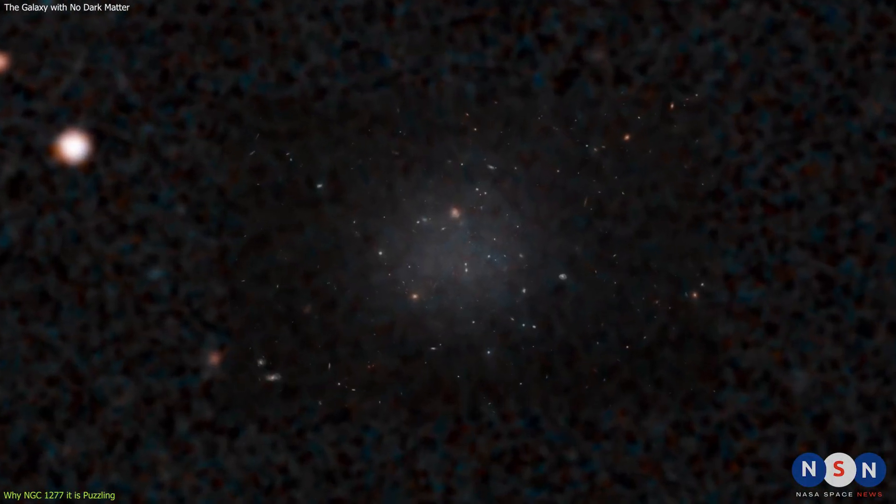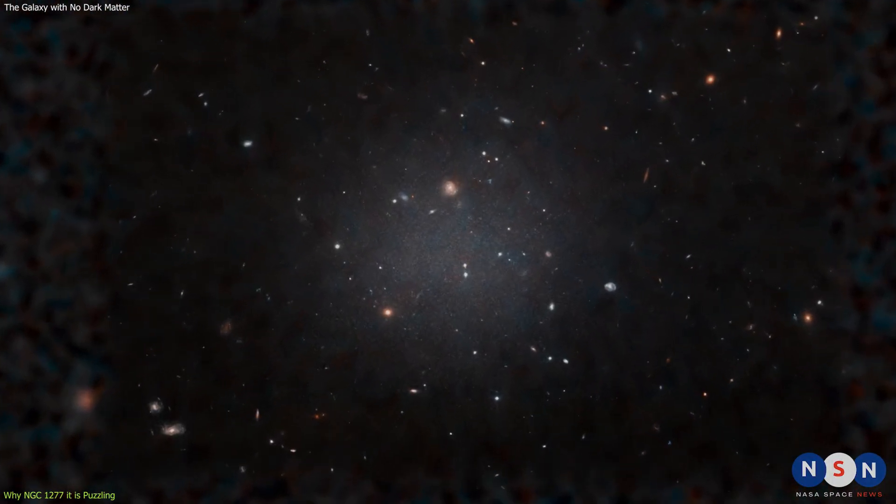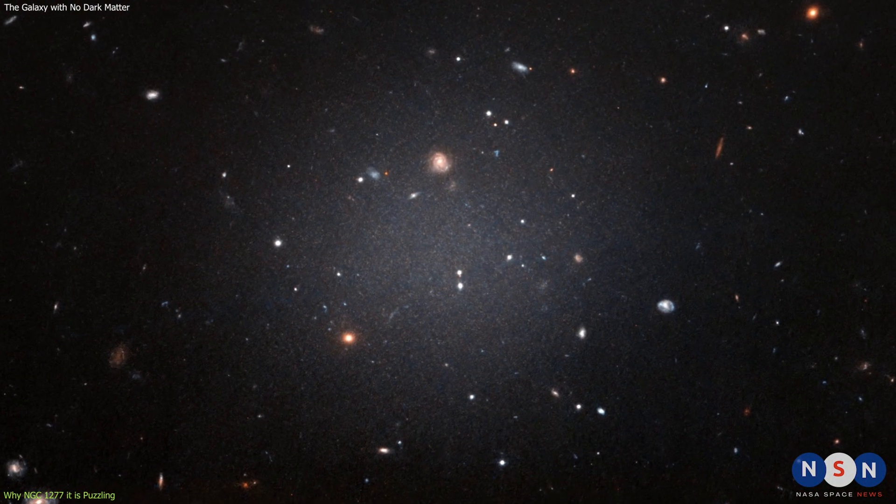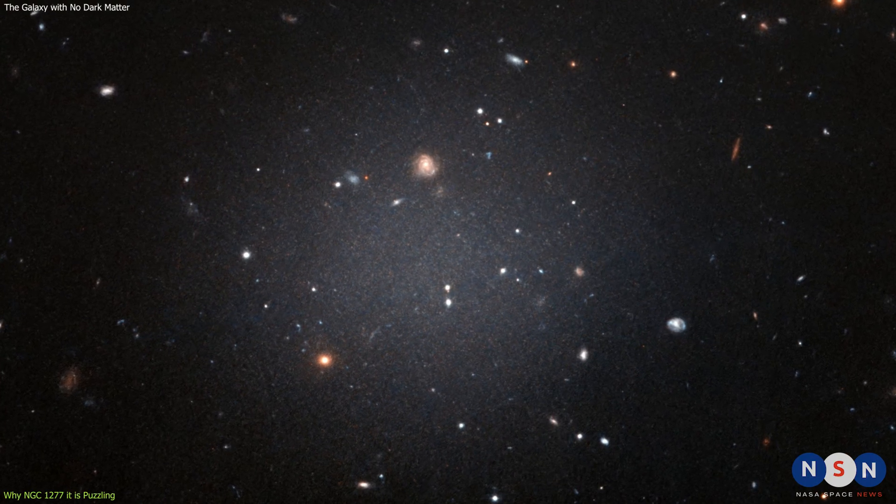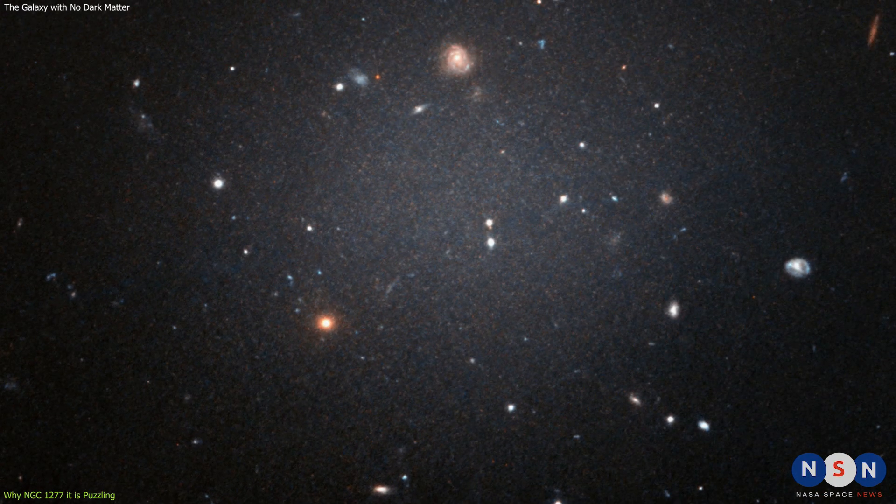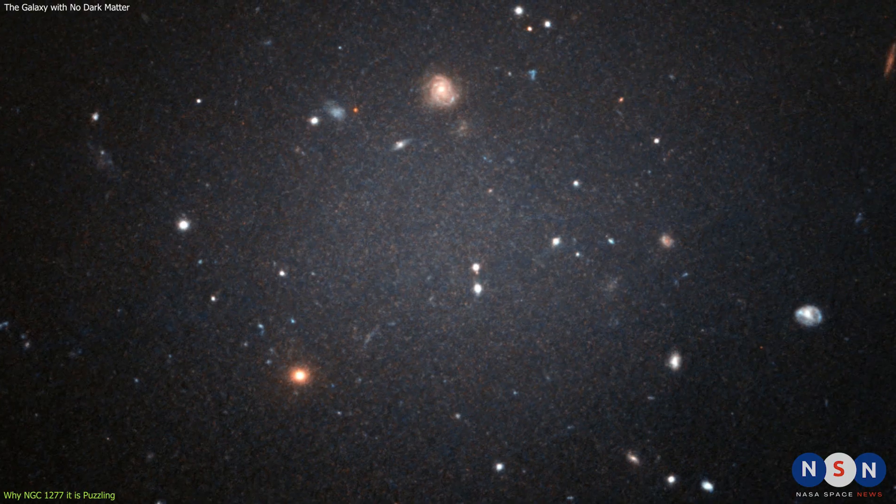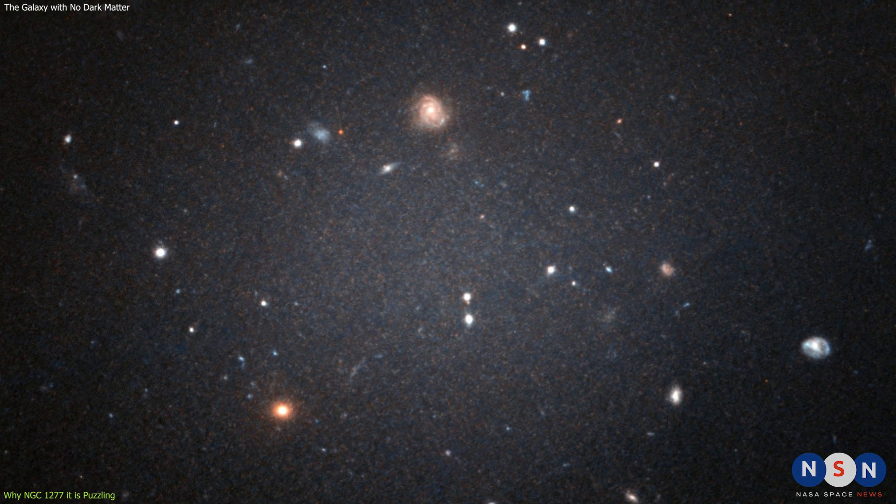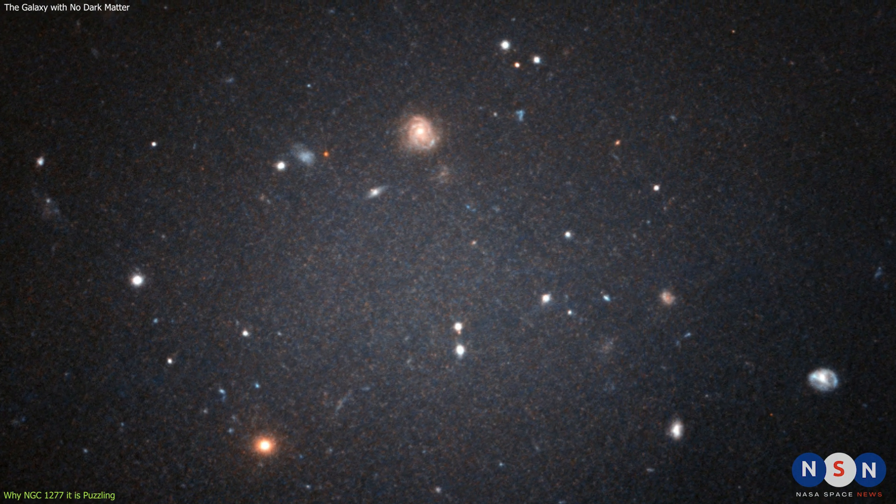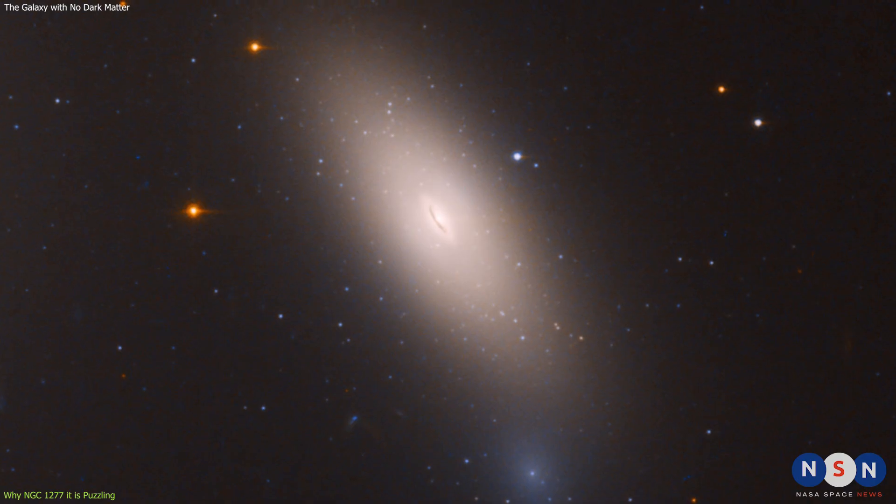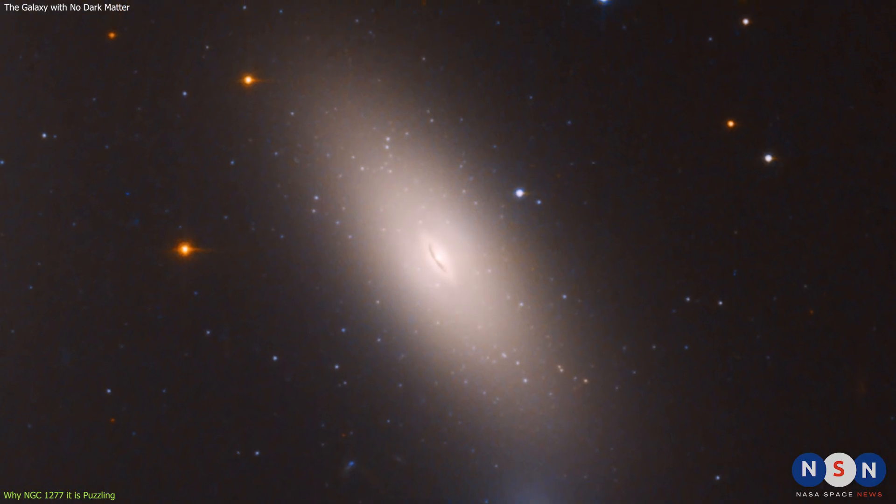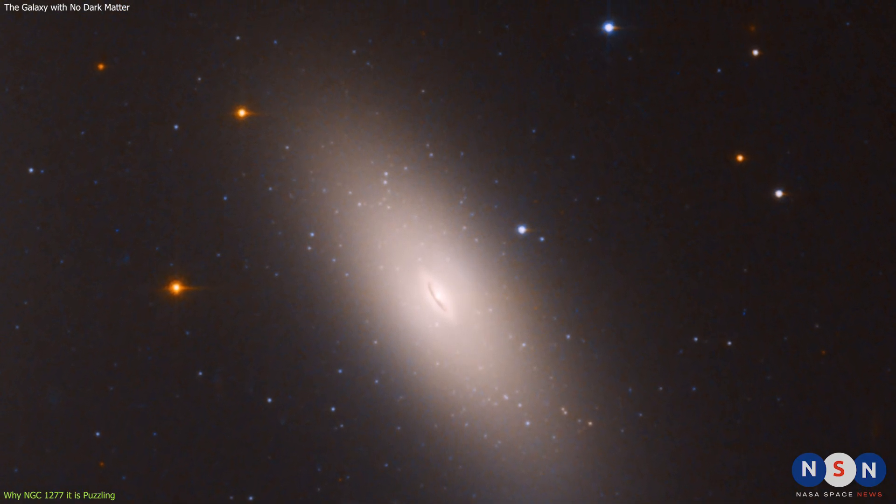Previous candidates for dark matter-free galaxies, such as NGC 1052-DF2 and NGC 1052-DF4, were much smaller and less massive than NGC 1277, and their results were more uncertain and controversial. NGC 1277, on the other hand, is a clear and robust case of a galaxy with no dark matter.